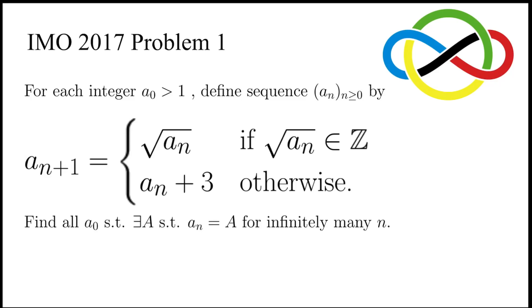This is Problem 1 in IMO 2017. For each integer a₀ greater than 1, we define the sequence aₙ by aₙ₊₁ equals either the square root of aₙ if it is an integer, or aₙ plus 3. Find all a₀ such that there exists an integer a such that aₙ equals a for infinitely many n.